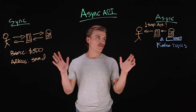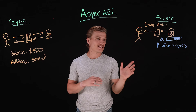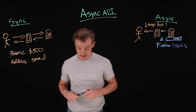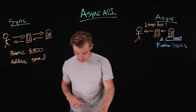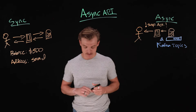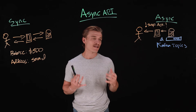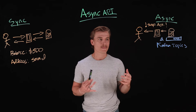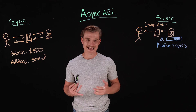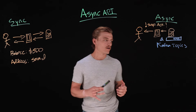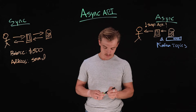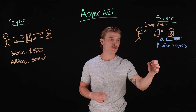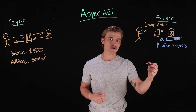Now that we have an understanding of both synchronous and asynchronous communication, we can bring async API back into the picture to understand what it is and how it's useful. The async API specification is used to describe message-driven API flows. It's protocol agnostic, so you can use it for APIs that use any asynchronous protocol.